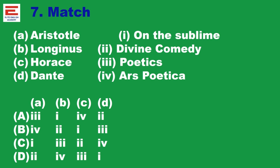Seventh 2017 question: Again match — classical critics with their works. Aristotle — Poetics; Longinus — On the Sublime; Horace — Ars Poetica; Dante — Divine Comedy. If you study the classical critics, you can easily answer this. Basic knowledge about the writers and their works helps you answer such questions.